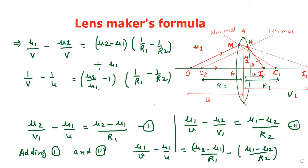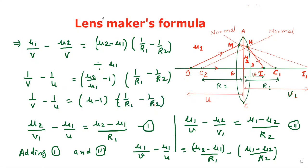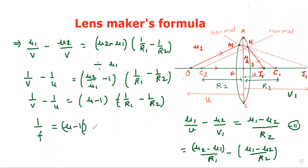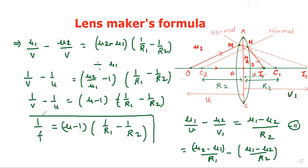Let's write mu2/mu1 as mu. So we get: 1/v minus 1/u equals (mu minus 1)(1/R1 minus 1/R2). Therefore, 1/f equals (mu minus 1)(1/R1 minus 1/R2). This is our required relation, known as the lensmaker's formula.